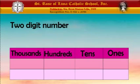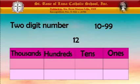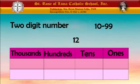Next is the 2-digit number. The 2-digit numbers are numbers from 10 to 99, and we use 2 place values in a 2-digit number. For example, we have 12. In a 2-digit number, we are going to use 2 place values: the 10s and the 1s. You look at the last digit of the number, which is 2, and we write it in the 1s. The next digit, 1, we write it in the 10s.